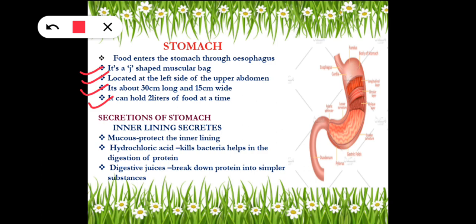You may be thinking about how food is digested and which type of food is digested in the stomach. We have studied that the mouth is the first compartment where carbohydrates are digested. The next compartment is the stomach — in the stomach, protein is the food item that is digested. To digest these proteins, the stomach secretes digestive juices, acids, and mucus, which break down protein into simpler substances.